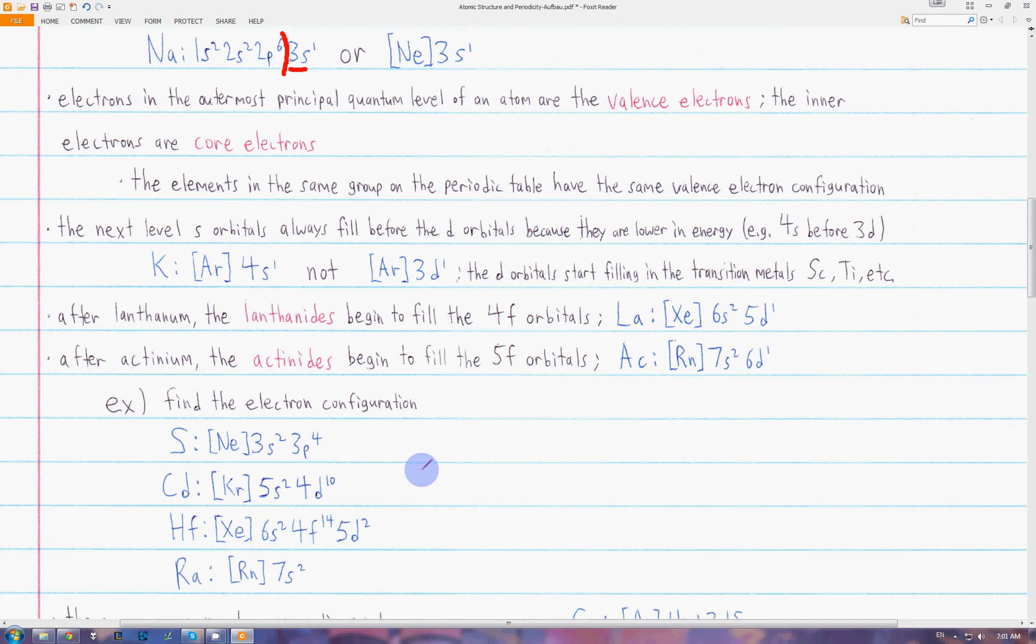Next, we have hafnium. The closest noble gas is xenon. We go down one to cesium and barium, which will make up the 6s2. Then we go to lanthanum. Remember, lanthanum is in the d orbitals, so one of them will go into 5d1. Then we go to the lanthanoid series. All of these have to fill before we can go back to hafnium in the transition metals. So we have 4f14, and then we go back to hafnium for another one in the 5d orbital.